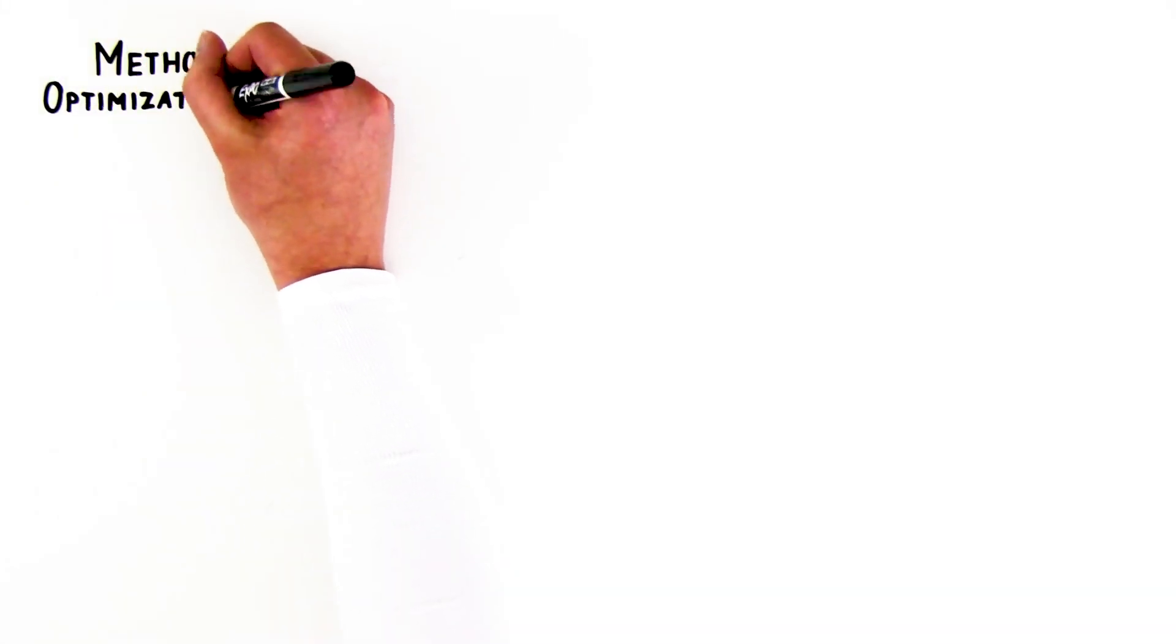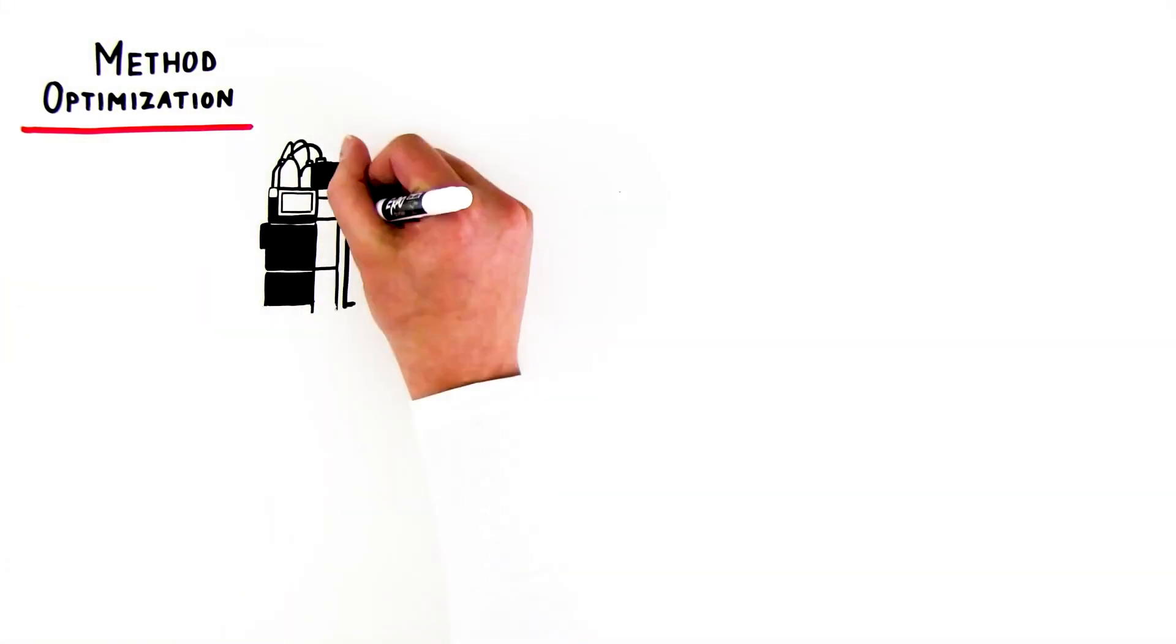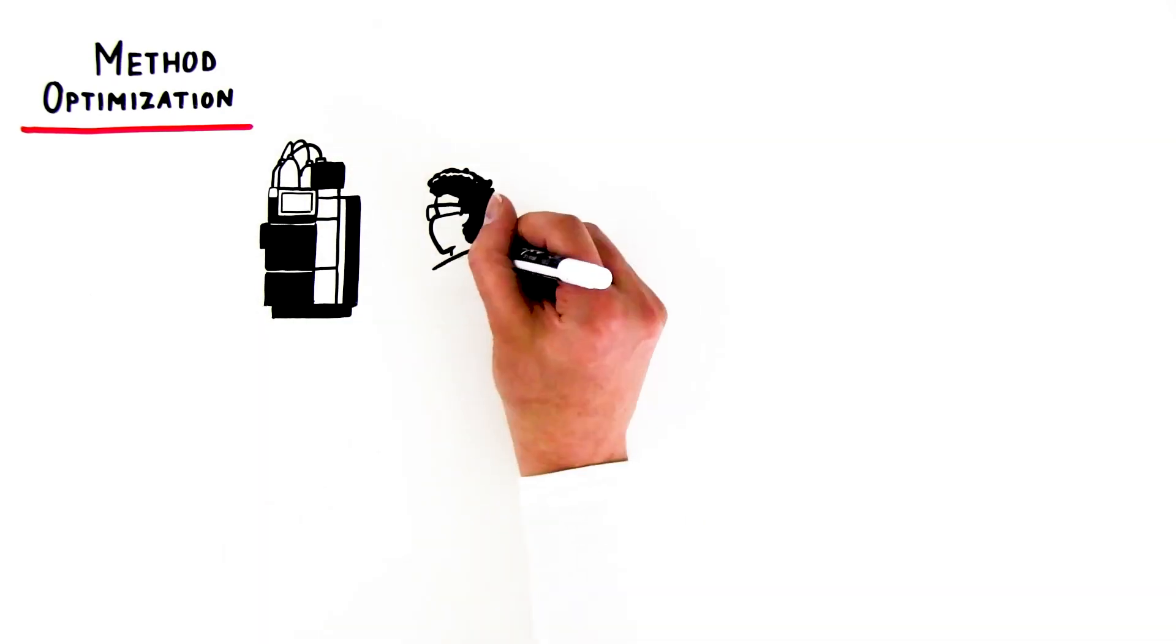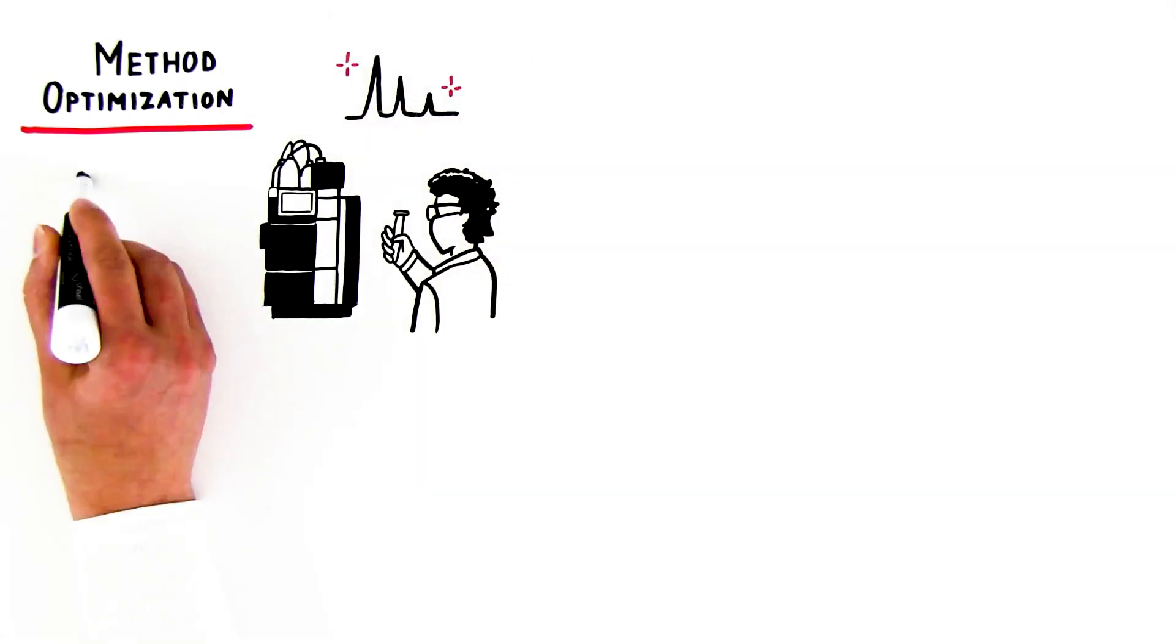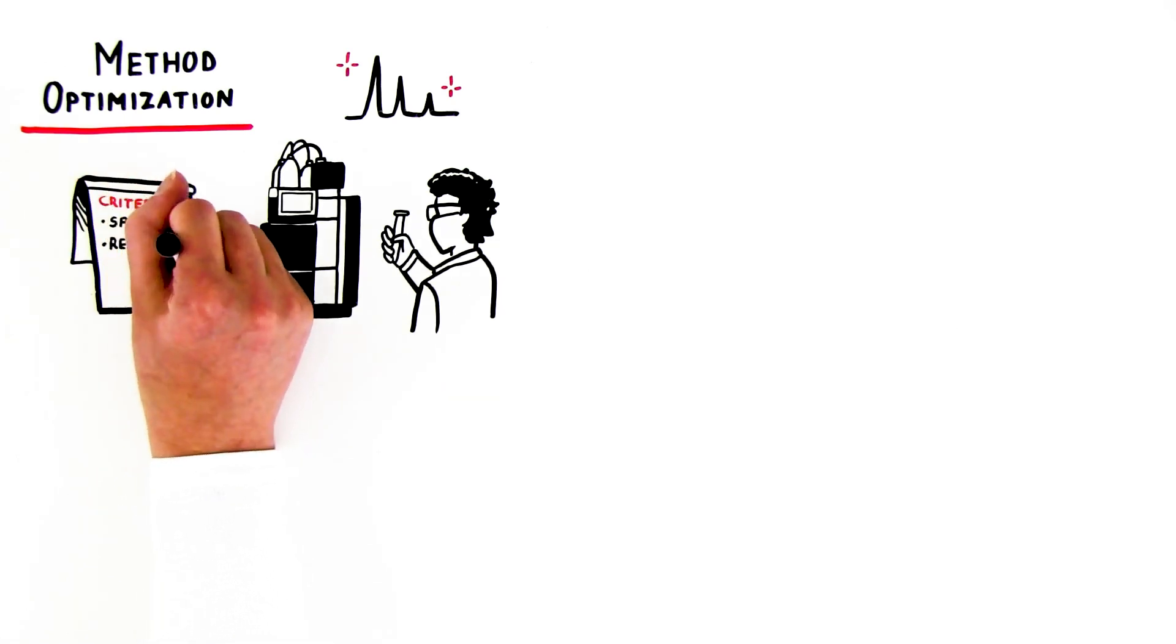Next is method optimization. Here, you'll fine-tune the method through iterative testing of various separation conditions to achieve the best possible separation based on predefined criteria, such as speed, resolution, or peak shape.